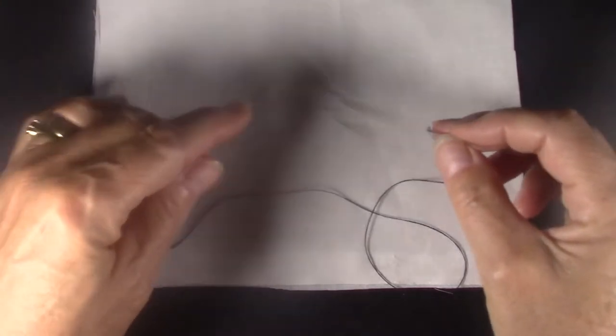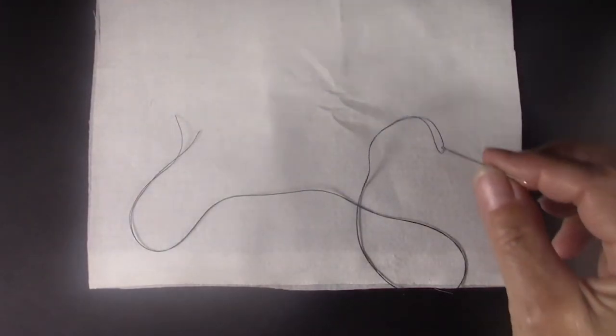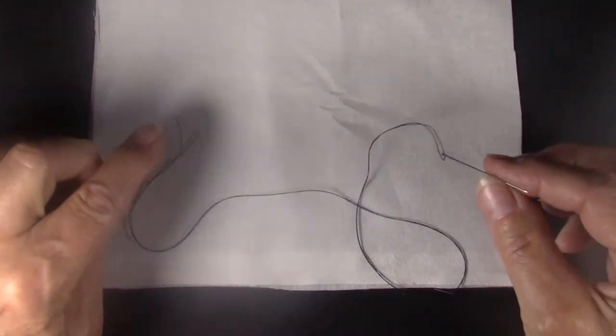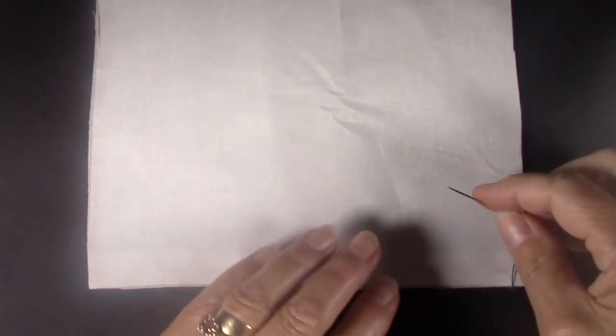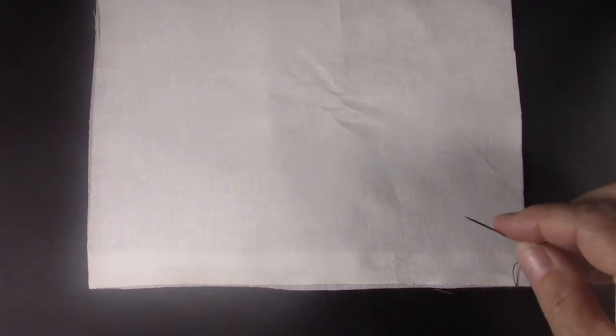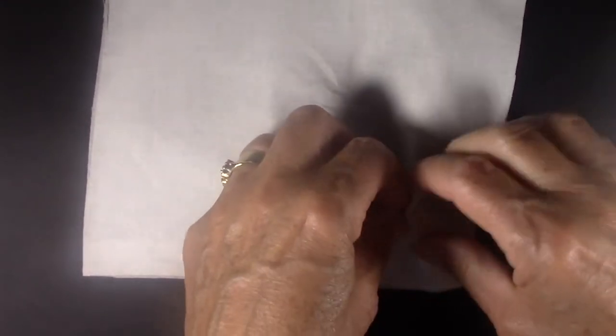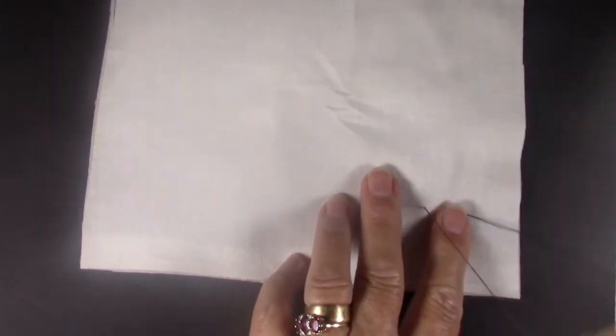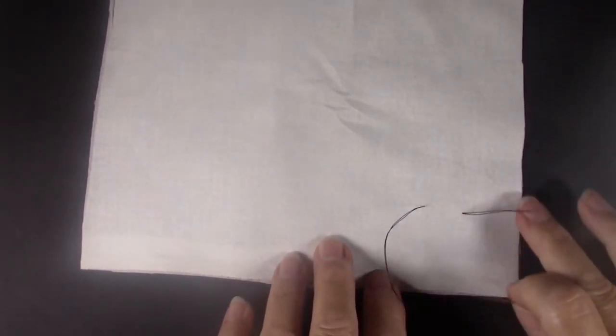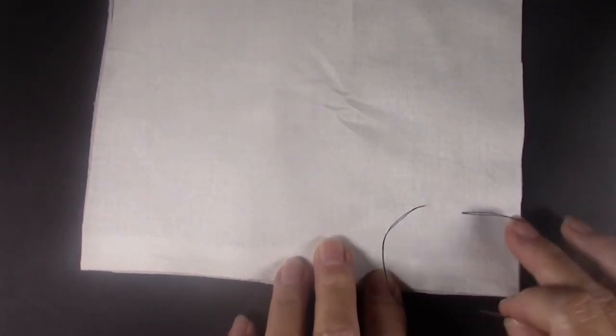I have my thread twice as long, so two arm lengths, no knot at the end. And definitely waxed. It goes much faster when you wax it. So what you're going to do is simply take a basting stitch. Make sure you leave a nice tail at the end.